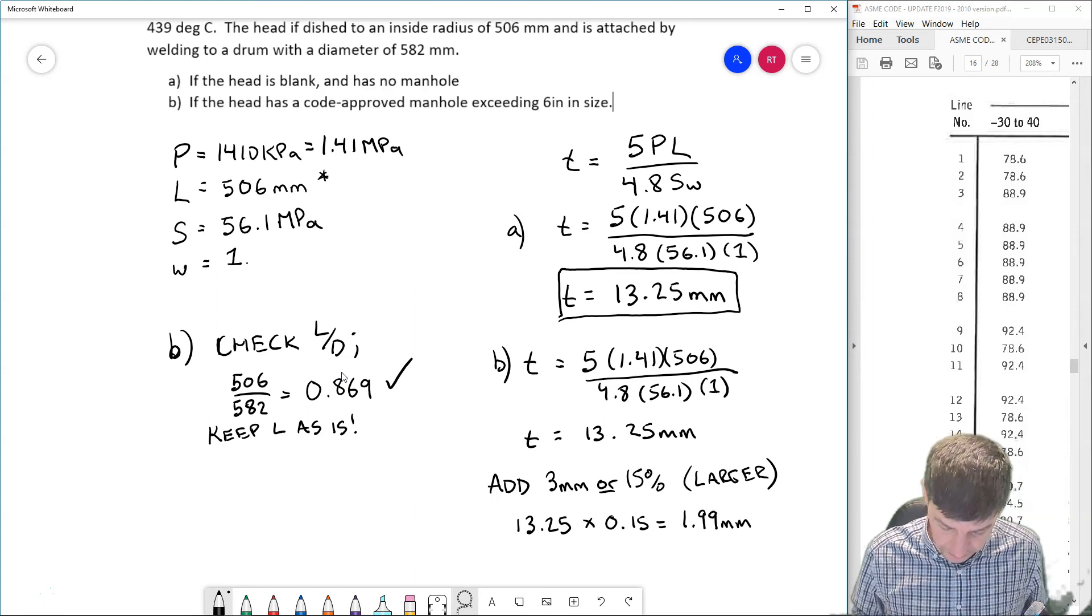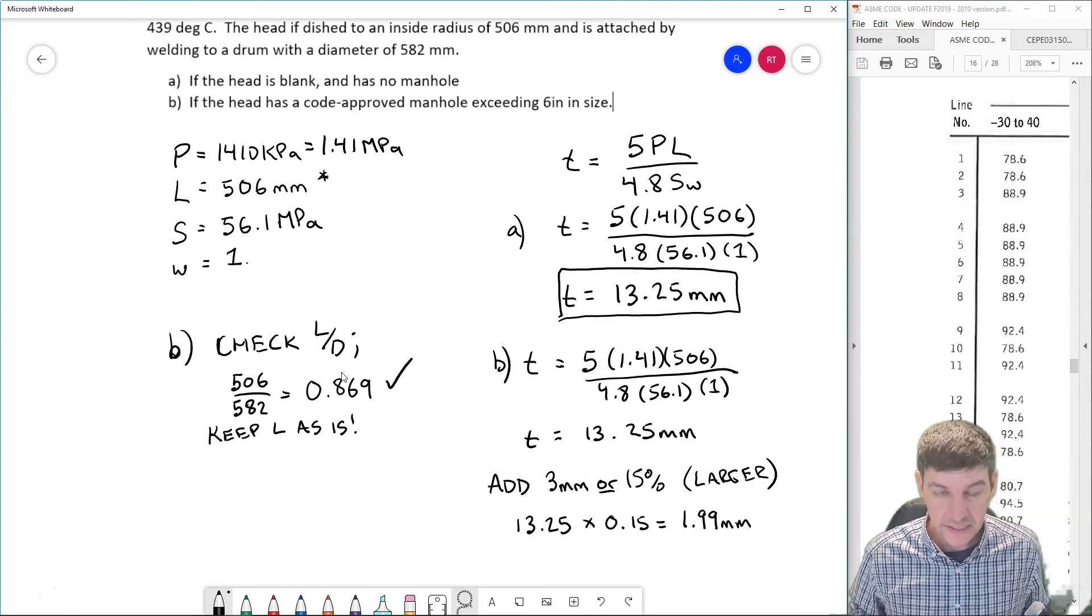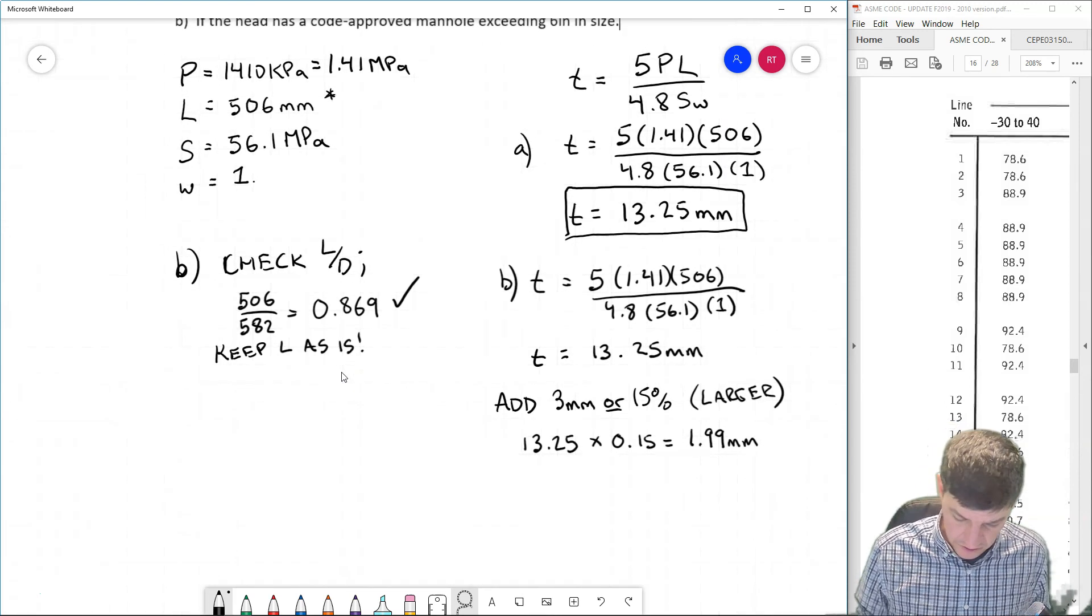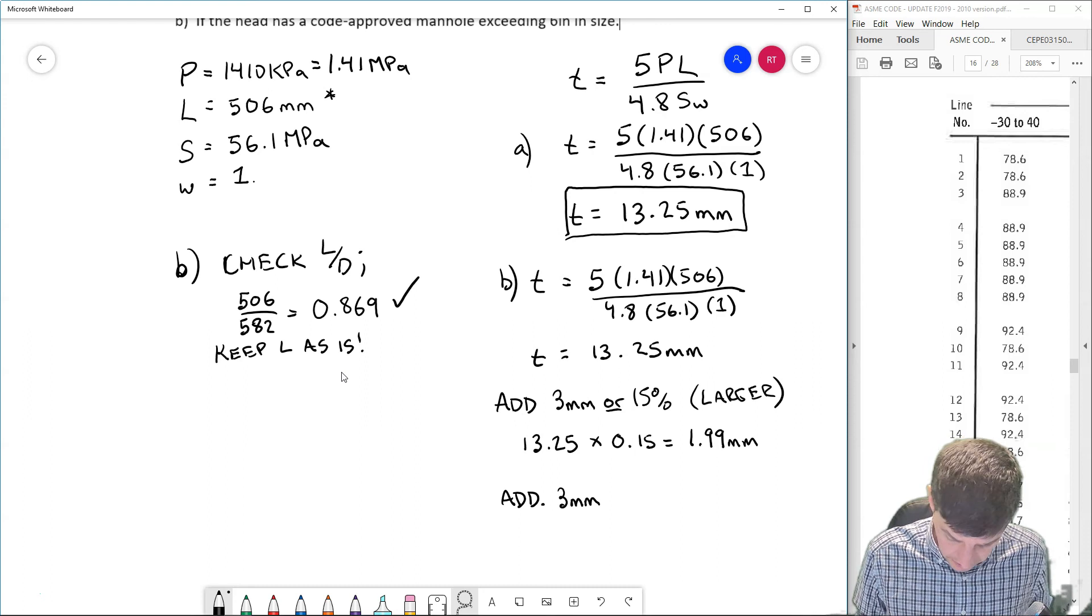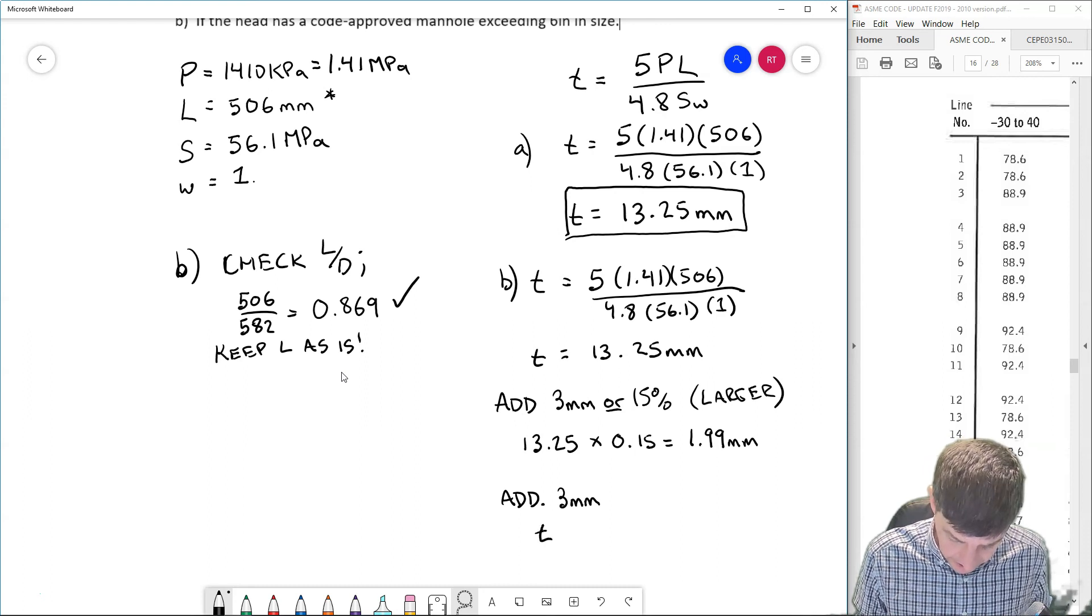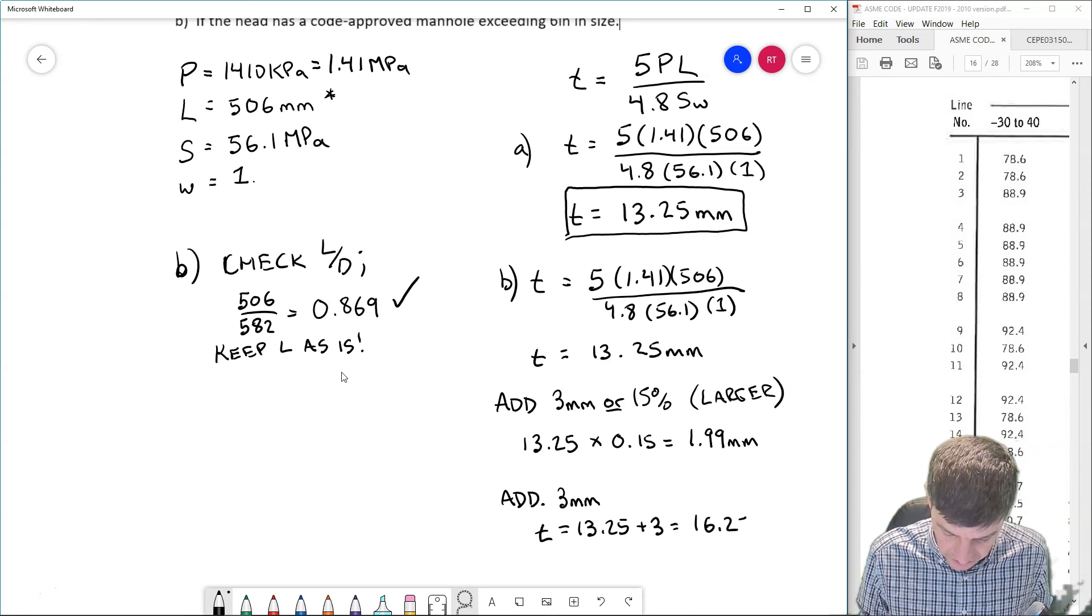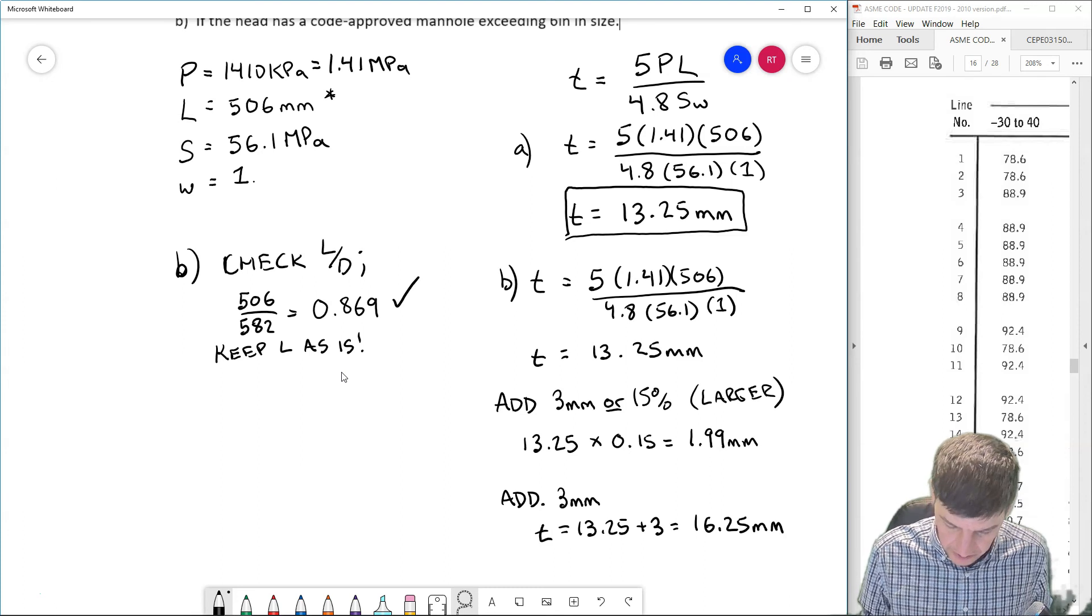So clearly the three millimeters in this case is larger, so I'm going to add three millimeters as it's the largest. So my thickness is going to be equal to 13.25 plus 3, is going to be equal to 16.25 millimeters, and that would be my required thickness for my dished head with a manhole.